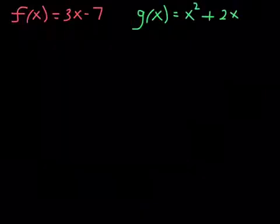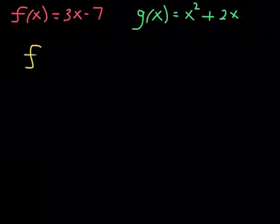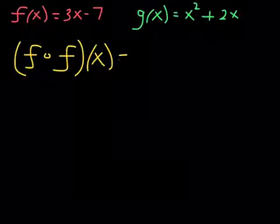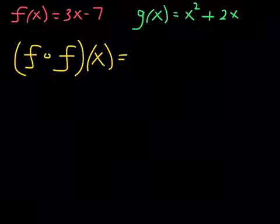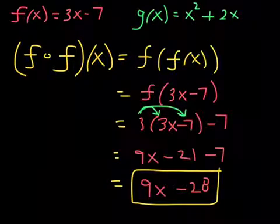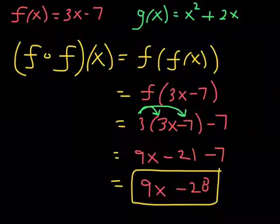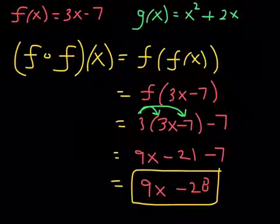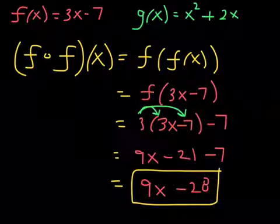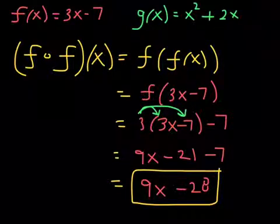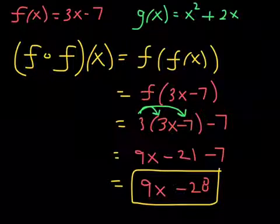Alright, here is f and g again. And this time around, they want you to find this composite function: f composed with itself, f composed with f at x. Alright everybody, like usual, I would like you to pause the video and try this out on your own. Alright, how did you do? f composed with f at x means f of f of x, which is f of, now replacing f of x with 3x minus 7 gives you f of 3x minus 7.